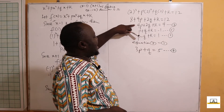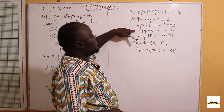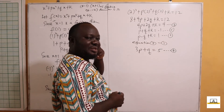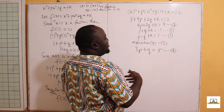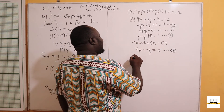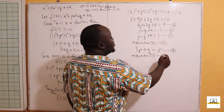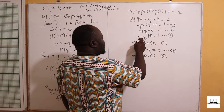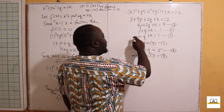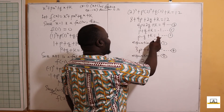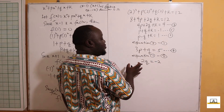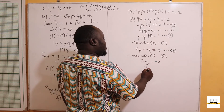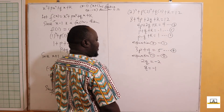Now using Equation 1 minus Equation 2 to eliminate k again: p minus p is zero, q minus negative q gives 2q, k minus k is zero, and negative 1 minus 1 gives negative 2. So 2q equals negative 2. Dividing both sides by 2, q equals negative 1.